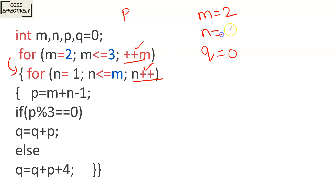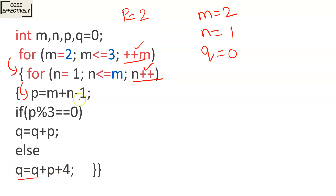N equals 1. It will check: N is less than or equal to M — 1 is less than or equal to 2, condition true. The loop body executes. P equals M plus N minus 1: 2 plus 1 is 3, minus 1 gives P equals 2. It checks P modulus 3 equal to 0 — the remainder is not 0, condition is false. So Q equals Q plus P plus 4: 0 plus 2 plus 4 gives Q equals 6.